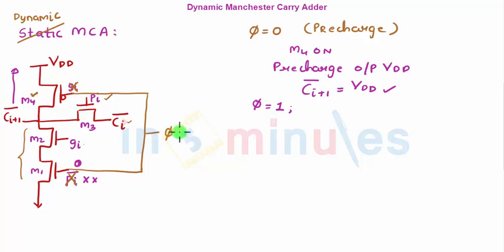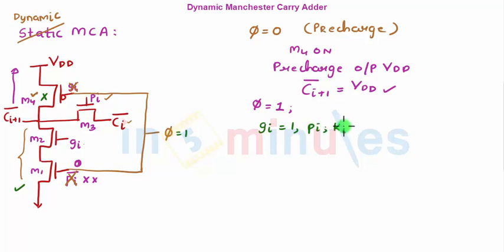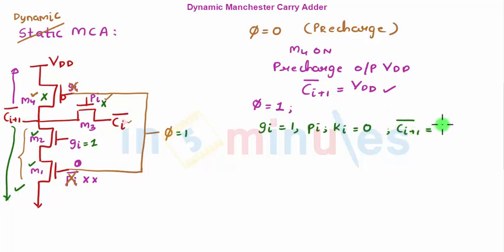When PHI equals one, M4 goes off and M1 turns on because it's an NMOS. Now we evaluate different values of G, P, and K. First case: GI equals one, meaning PI and KI are both zero. M2 is on, as is M1, but M3 is off. This pulls the output toward ground, so CI+1 bar equals zero, meaning CI+1 equals one. When GI is one we want Cout to be one, so functionality is achieved.